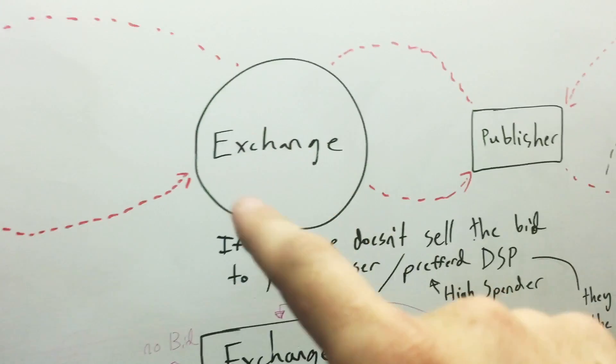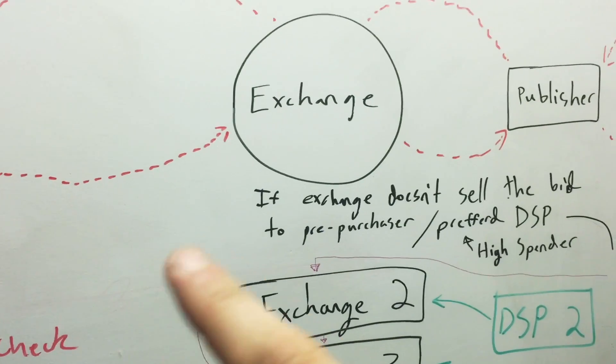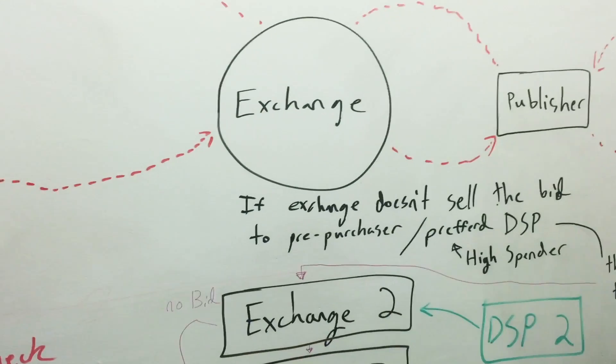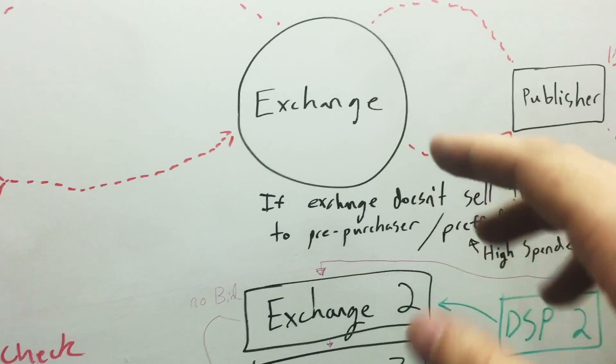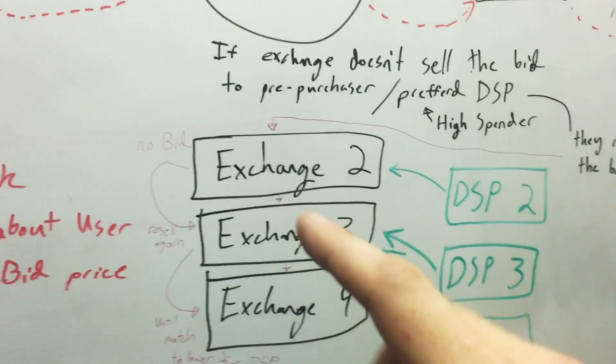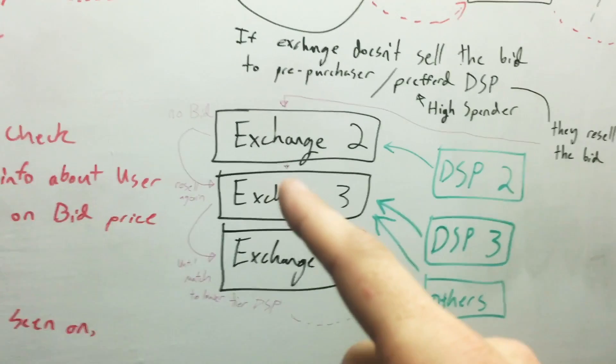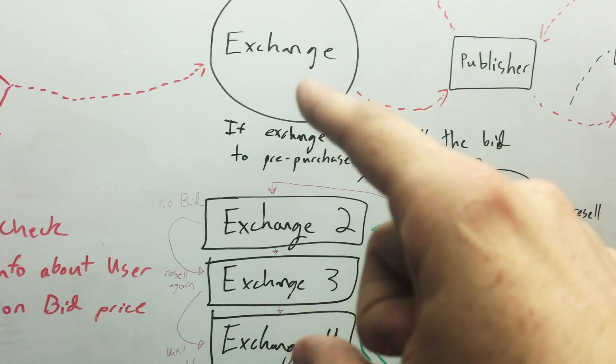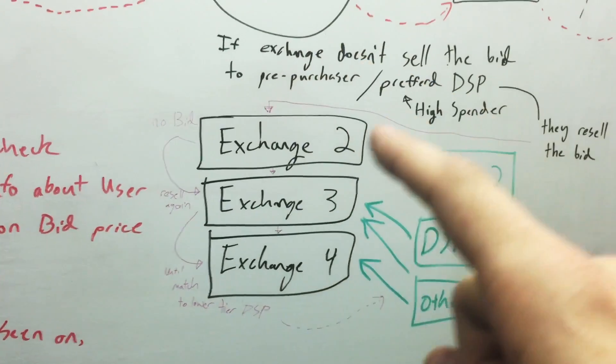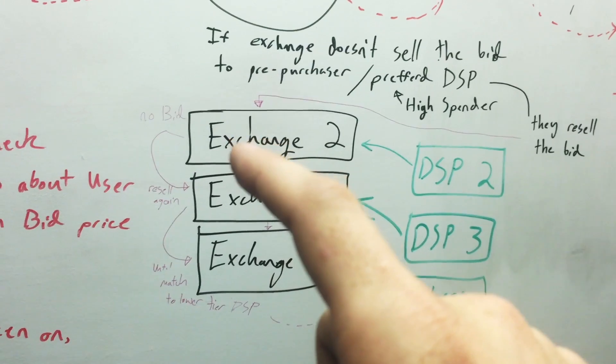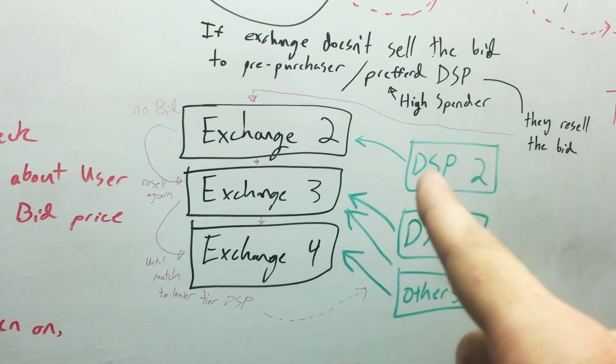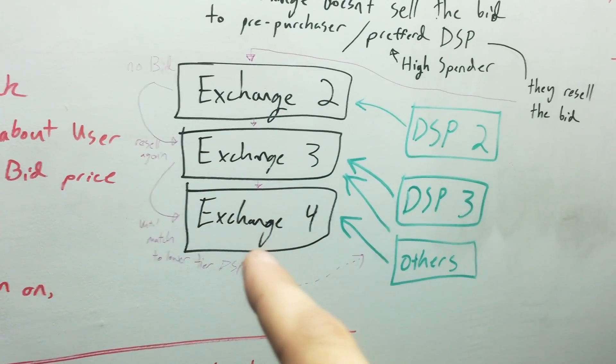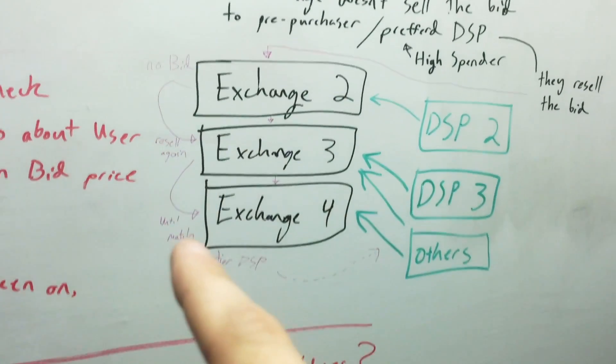So what the exchange will do if it has no bidders is, a lot of times, because exchanges only have certain DSPs connected to them, they'll go to other exchanges or other networks and say hey, do you have any buyers for this person? But they'll add a charge in here just for them, so they'll make a little bit but it all adds up. Then they'll go to an Exchange 2, and if DSP 2 doesn't buy and there are other people, then they'll do the same thing, go to Exchange 3. This is basically the waterfall, this is referred to as a waterfall in a sense.